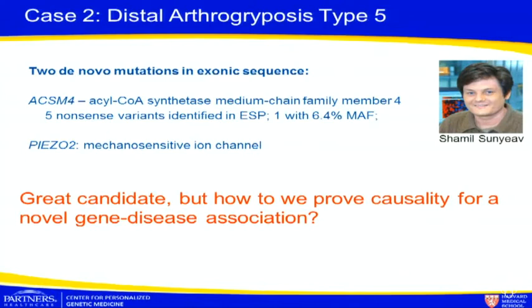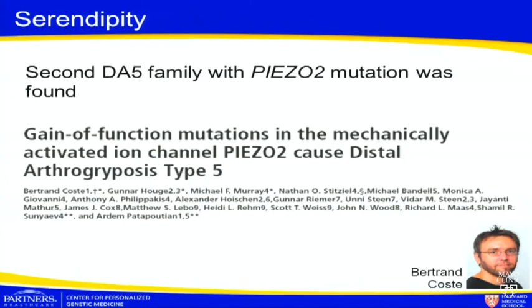We called a colleague, Bertrand Kost, who was studying this gene functionally, and asked him to put the mutation into his system to see if it showed an effect. Then serendipity played a role — another group in Canada who happened to exome sequence another family with DA5 found a mutation in the same gene, happened to call the same researcher within a week, and now we had two cases. You really need that second family with an independent observation of the same phenotype. Eventually, with those two pieces of data and a gain-of-function assay, we concluded that PIEZO2 was the gene causing DA5, and this was recently published.